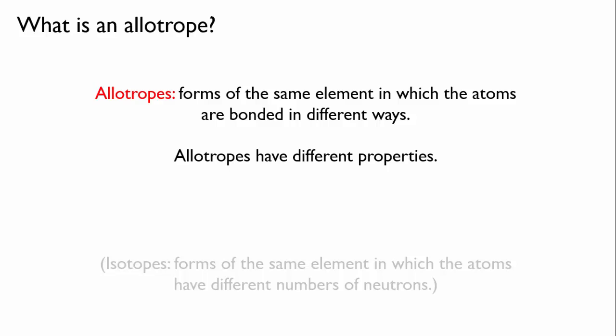Let's just recall that isotopes are different forms of the same element where the atoms have different numbers of neutrons. So don't get isotopes mixed up with allotropes. Two allotropes of the same element are made of the same kind of atom. For instance, two allotropes of carbon would both be made only of carbon atoms. But the different bonding arrangement makes a huge difference to their properties. So let's have a look at some of these.